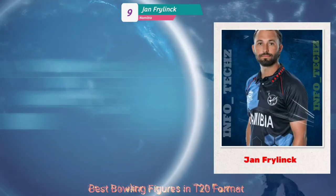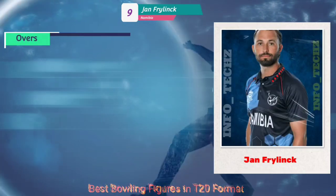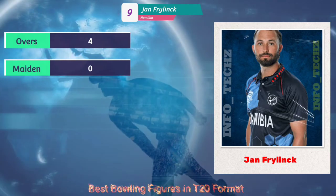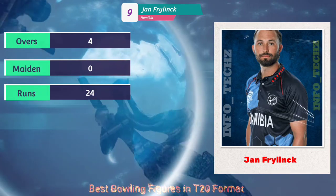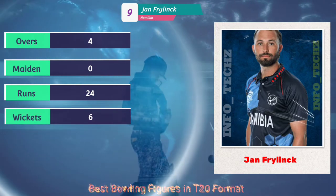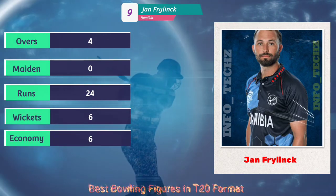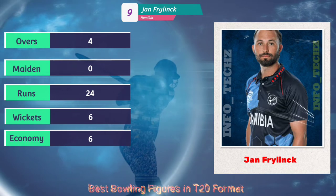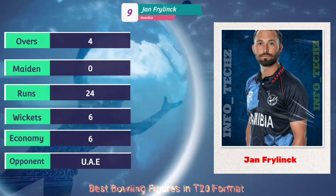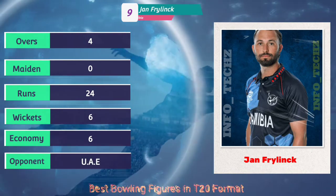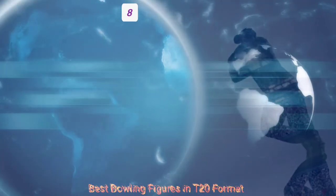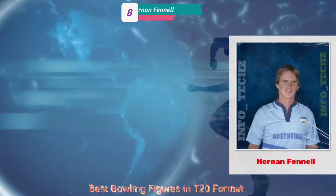At number nine, John Franklin from Namibia. He bowled four overs, no maiden, 24 runs, with six wickets and an economy of six. His opponent was UAE. Both teams were associate teams.